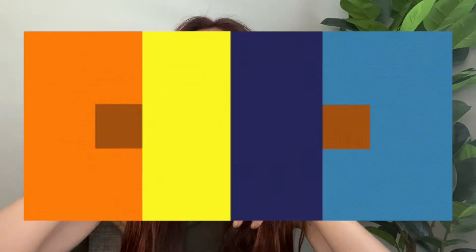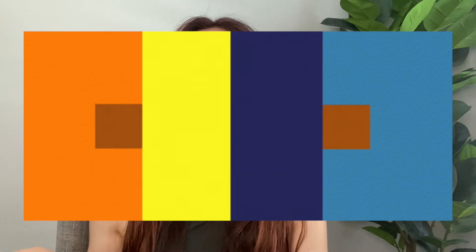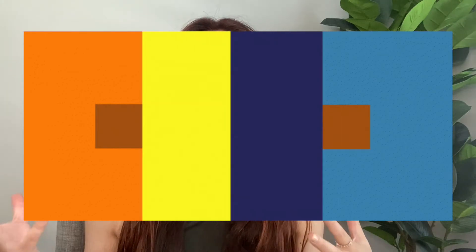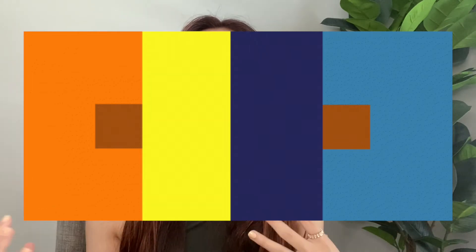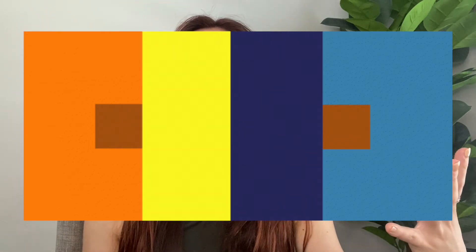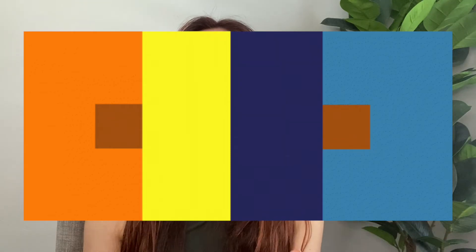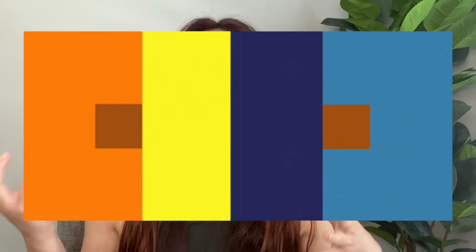I'm going to put up on screen a color example with some orange and some blues. On the left you'll see orange, on the right you'll see blue, and in the middle of both the orange and the blue sections there's a smaller brown square. If you look at the orange side, it might appear to be a pretty deep, warm-tone brown, but on the right side it looks like a different color entirely.